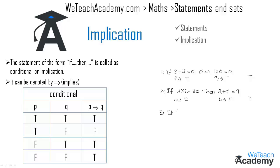Now let us consider another example: if 5×6=30, then 2÷1=1. Let us consider both statements as r and s. Here r is true, and s is false since 2÷1=2. So the truth value for r implies s is false.